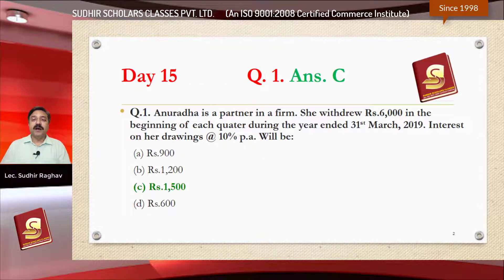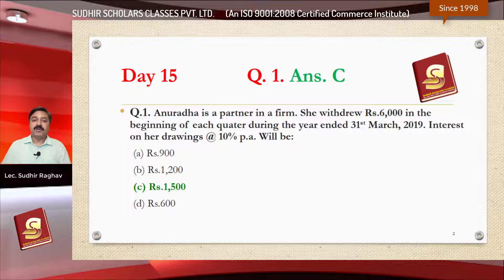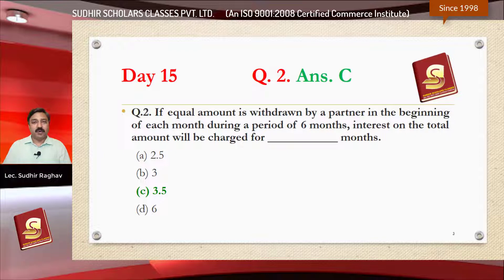Day 15 ka first question: Anuradha is a partner in a firm. She withdraws rupees 6000 in the beginning of each quarter during the year. On 31st March 2019, interest on her drawings at the rate of 10 percent per annum — the right answer after calculation is option C, rupees 1500.